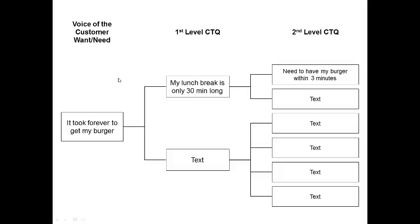The tree format is helpful in identifying what is measurable. So from 'it took forever to get my burger,' the first level is 'my lunch break is only 30 minutes long.' Now this is important, but it's still not measurable — it gets us closer. Now, if we were to unpack that and ask the customer, 'How long would you like for your burger to be ready for you to be happy?' The second level might be: 'I need to have my burger within three minutes.'